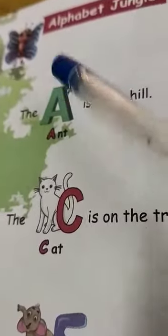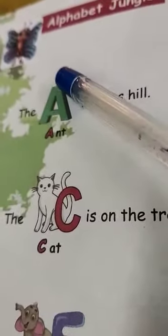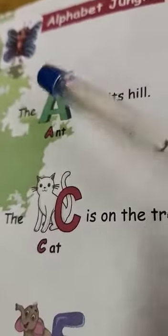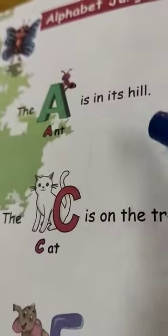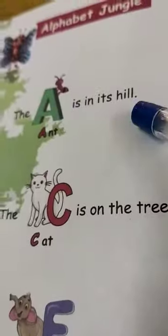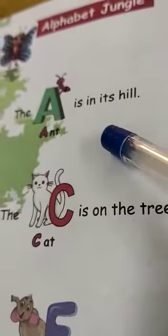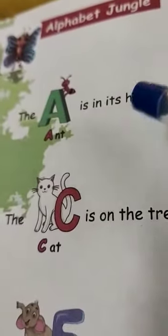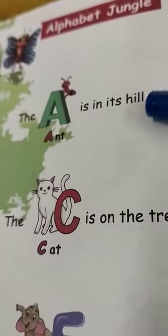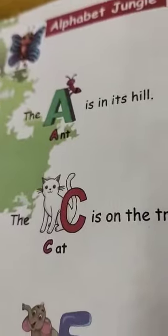See A, it's on the top — that is, it's on the hill. Here in the alphabet jungle frame, the letter A is imagined as a hill with the ant inside, like a story.